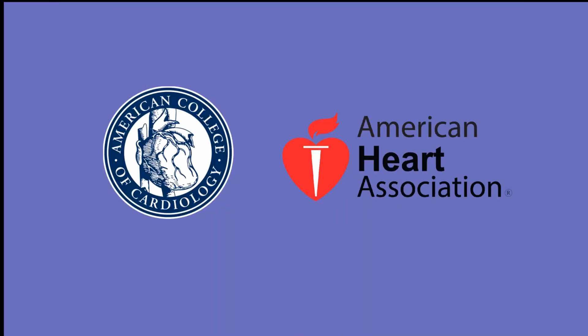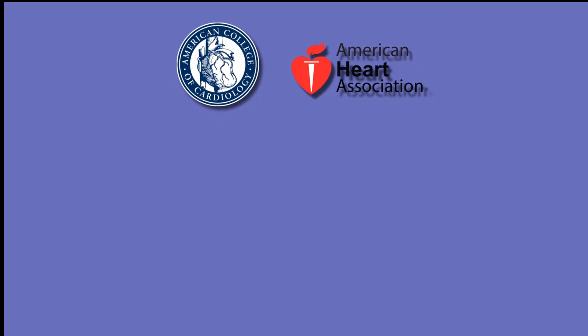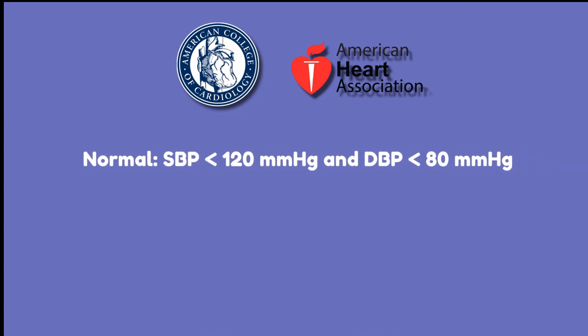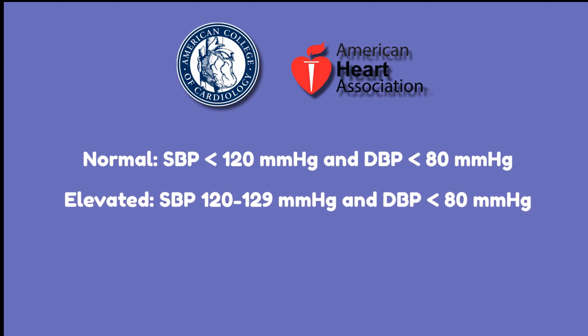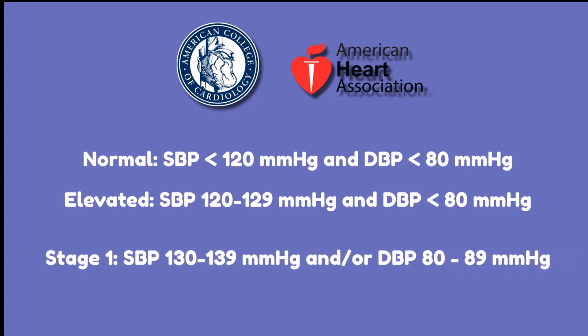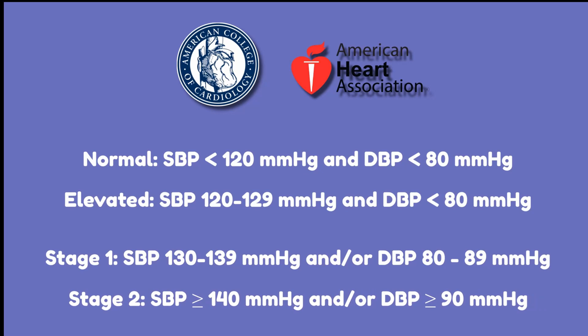The American College of Cardiology and American Heart Association have defined four categories of blood pressure in adults based on systolic and/or diastolic readings. Normal blood pressure is a systolic less than 120 and diastolic less than 80. Elevated blood pressure is a systolic of 120 to 129 and diastolic less than 80. Stage 1 hypertension is a systolic of 130 to 139 and diastolic of 80 to 89. Stage 2 hypertension is a systolic equal to or greater than 140 and diastolic equal to or greater than 90.